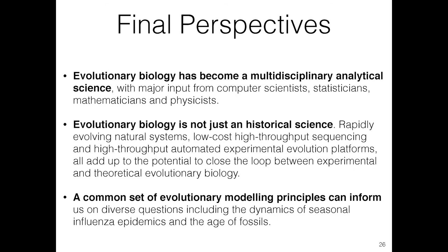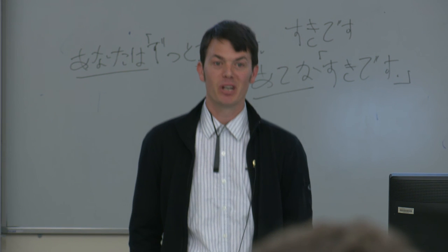In conclusion, evolutionary biology has become an analytical science that involves computer scientists, statisticians, mathematicians, and physicists, among others. It's also not just a historical science — because of rapidly evolving natural systems and low-cost, high-throughput sequencing, this is a science about what's happening today. In the future we're really going to close the loop between experimental and theoretical evolutionary biology, especially in areas like cancer, and a common set of evolutionary principles can inform us about very diverse questions.